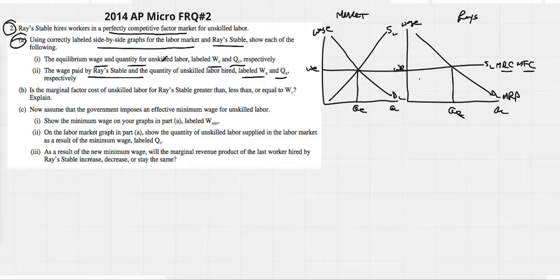So I think we're all set up for A. B is the marginal factor cost of unskilled labor for Ray's stable greater than, less than, or equal to W-E. We would say it's equal because they are wage takers. That saves you a lot of energy just knowing that we could write wage takers there and get the point.